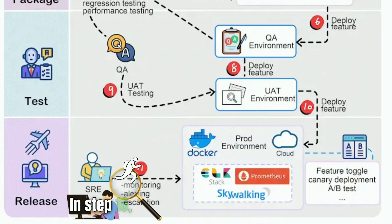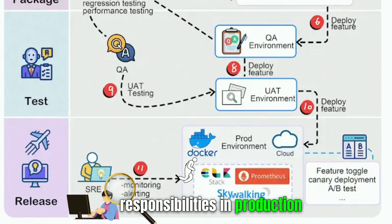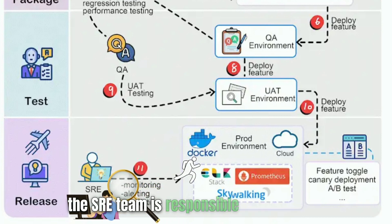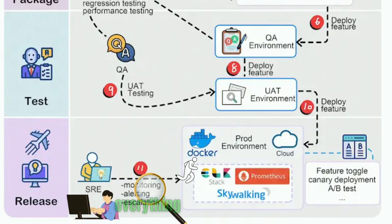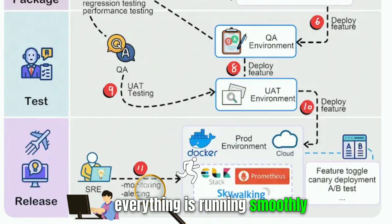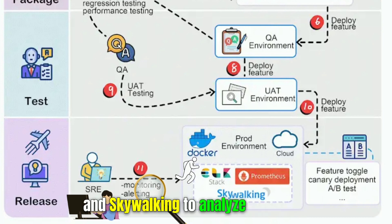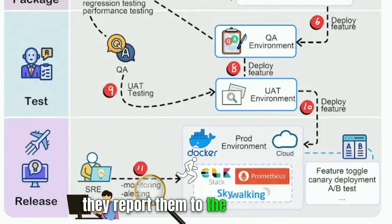In step ten, the SRE team is responsible for monitoring the production environment and making sure everything is running smoothly. They use tools like ELK, Prometheus, and Skywalking to analyze logs and trace processes. If they find any issues, they report them to the QA and dev teams, who then work to fix the issues based on their priority.